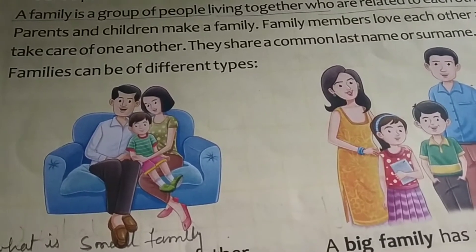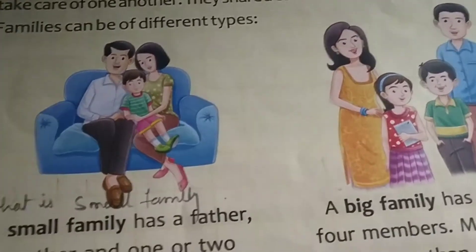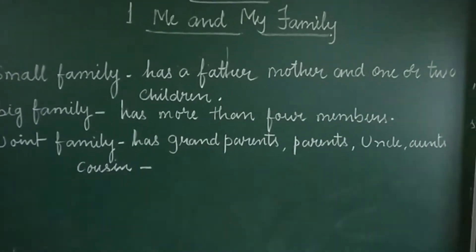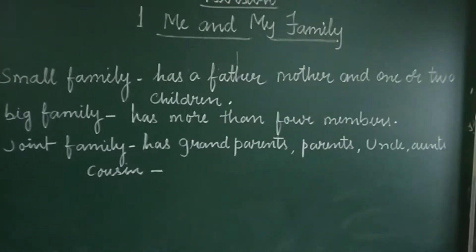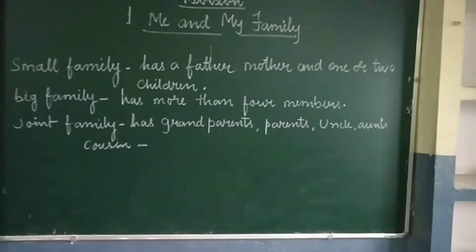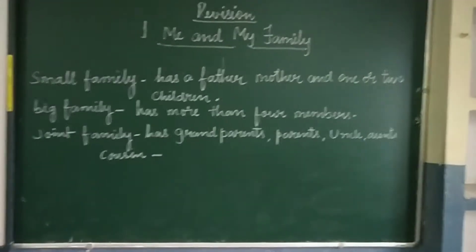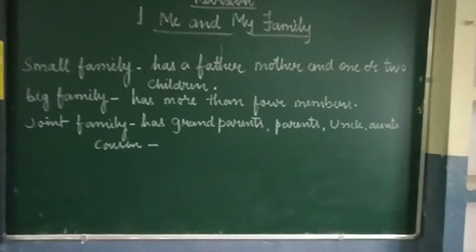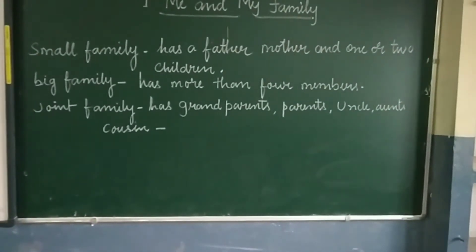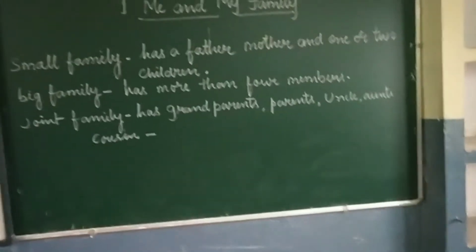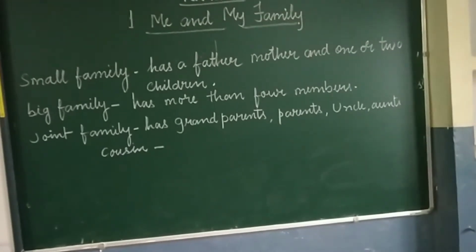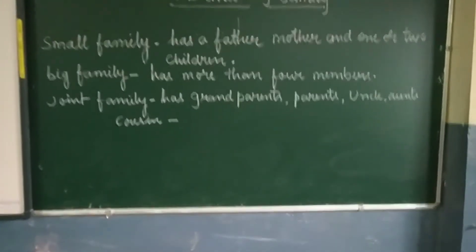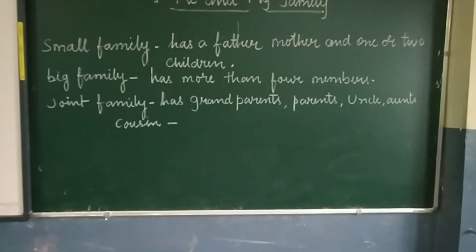Family can be of different types — small family, big family, and joint family. A small family has a father, mother, and one or two children, meaning only about four members. A big family has more than four members — like mother, father, and more than two children.